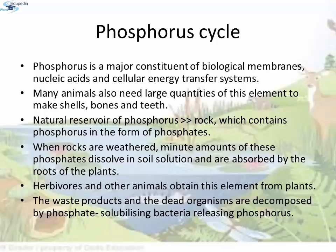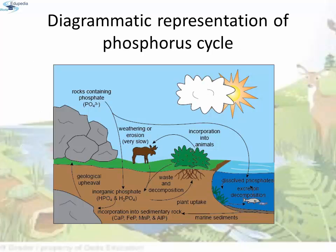Phosphorus Cycle: Phosphorus is a major constituent of biological membranes, nucleic acids, and cellular energy transfer systems. Many animals also need large quantities of this element to make shells, bones, and teeth. The natural reservoir of phosphorus is rock, which contains phosphorus in the form of phosphates. When rocks are weathered, minute amounts of these phosphates dissolve in soil solution and are absorbed by the roots of plants. Herbivores and other animals obtain these elements from plants. Waste products and dead organisms are decomposed by phosphate-solubilizing bacteria, releasing phosphorus back to the ecosystem.